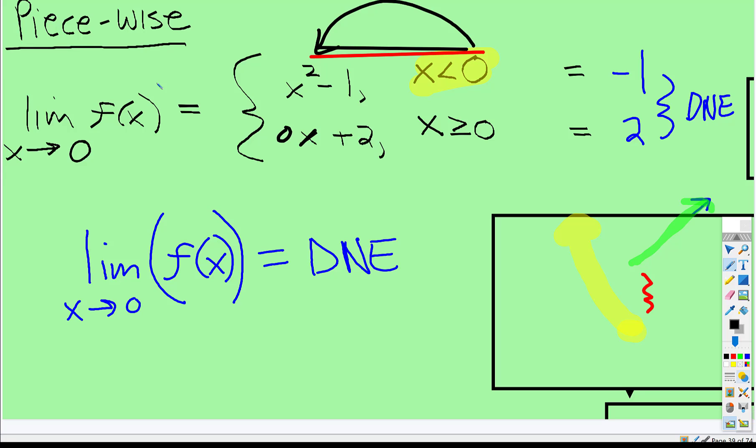there's two different functions here. Well those two functions are part of the f of x function. So you just write the limit as x approaches zero, f of x does not exist.